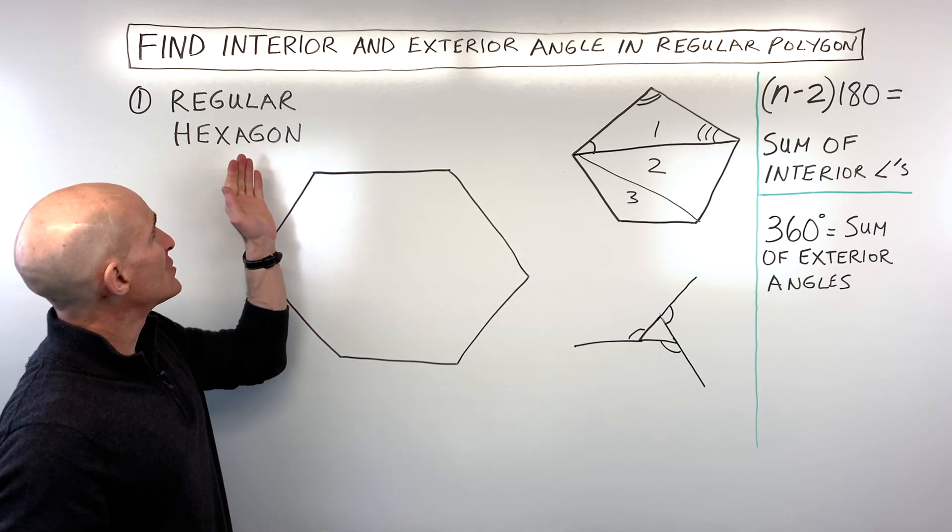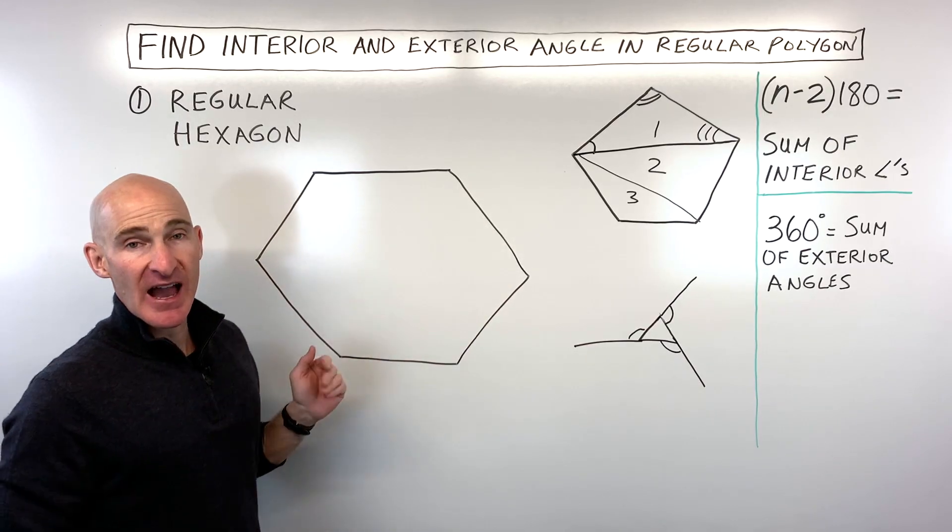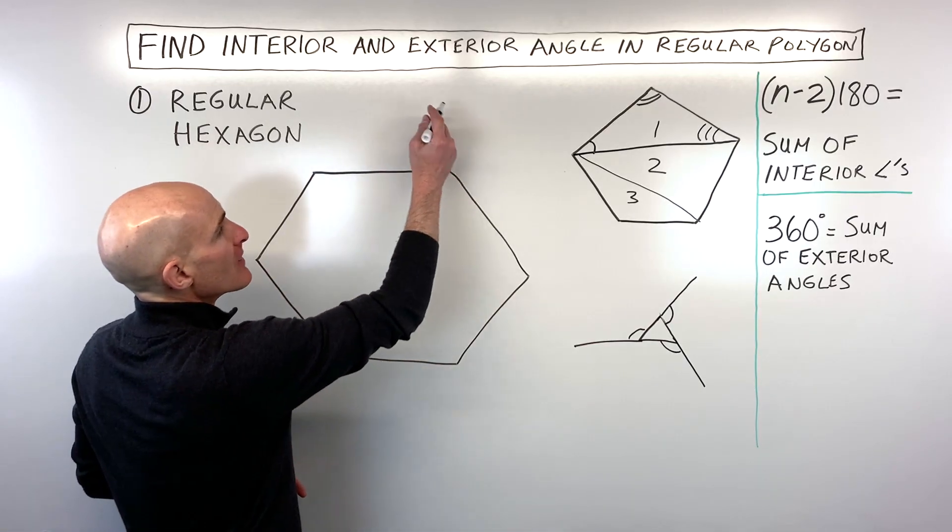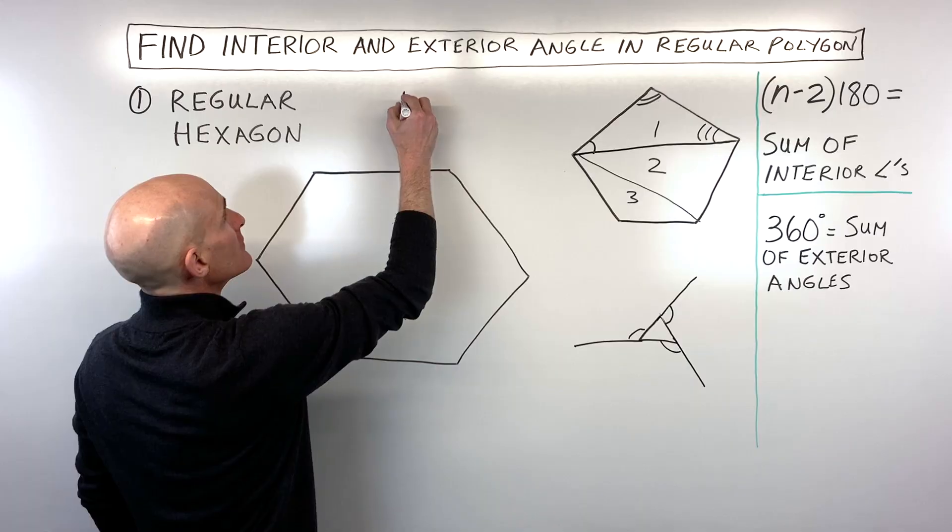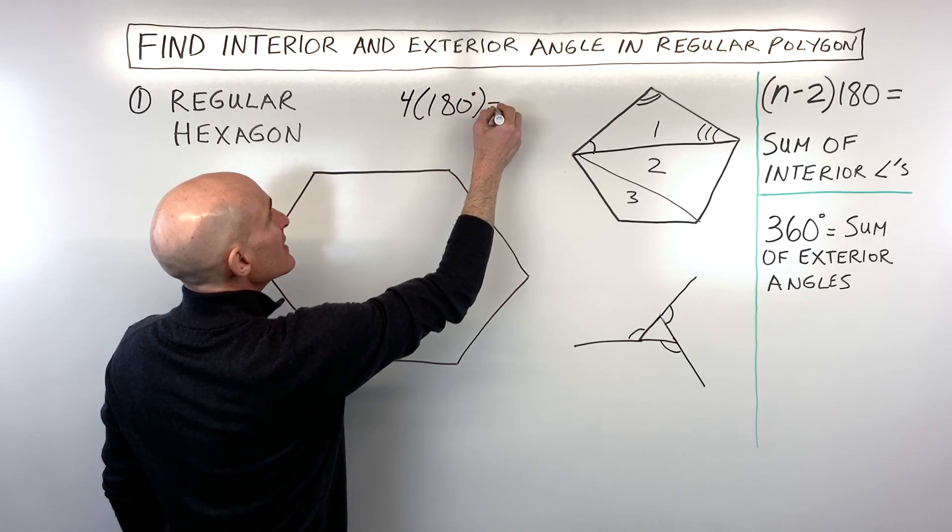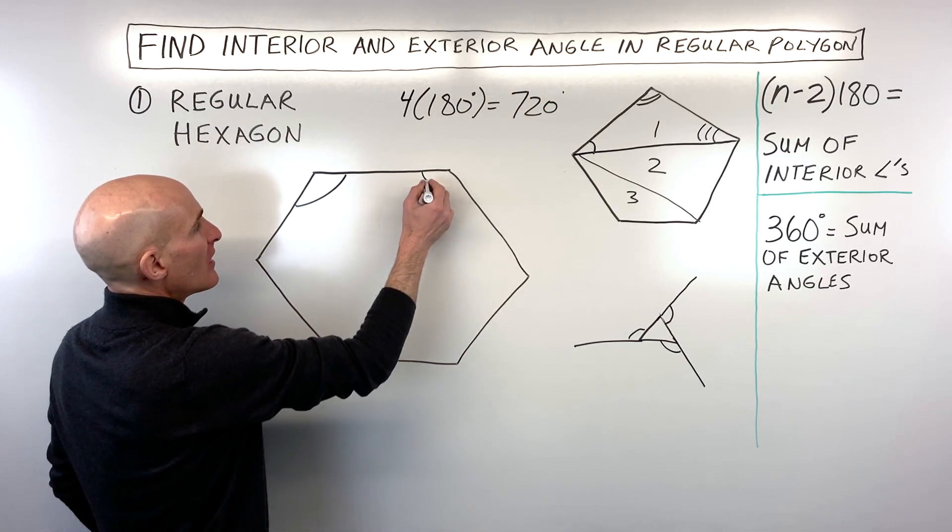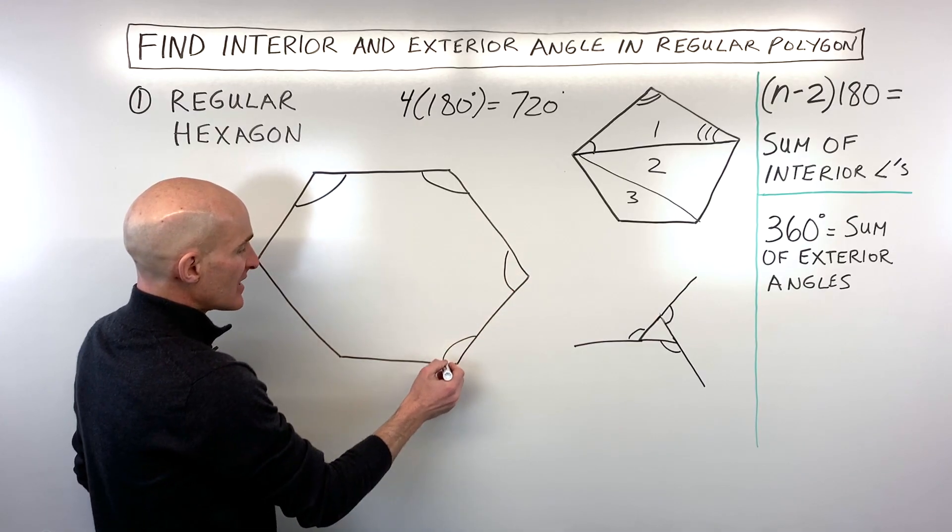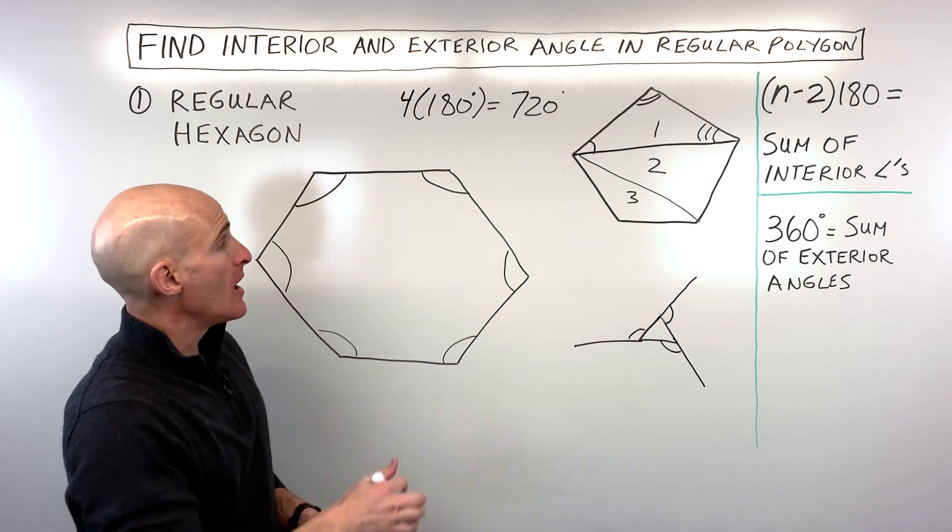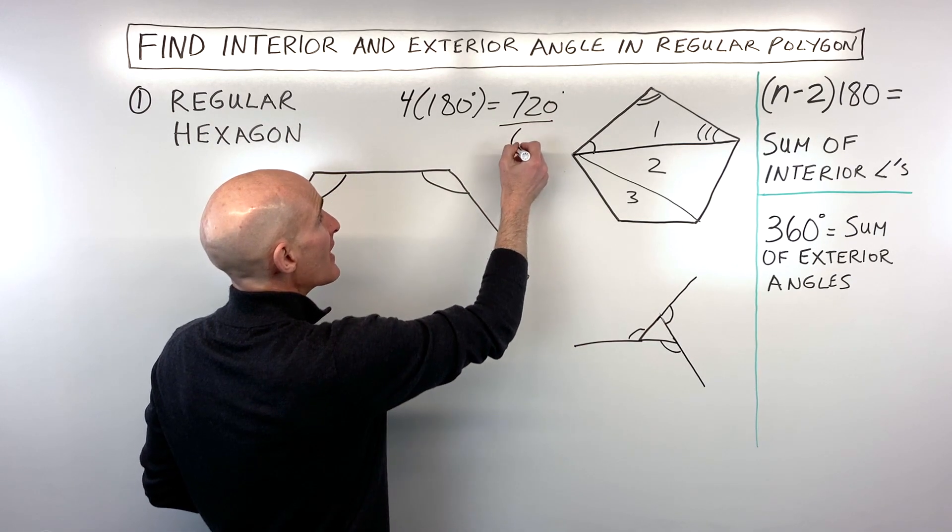So there's a couple different ways to do this. Let's start off by working with a regular hexagon. So we know a hexagon has six sides, six angles. So one way to do this is we could say, hmm, six minus two is four times 180 degrees is equal to 720 degrees. So that means that all these angles here on the inside of this hexagon are going to add up together to 720 degrees.